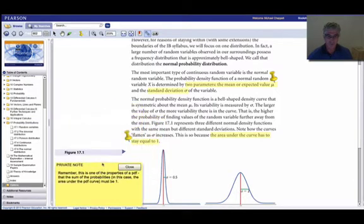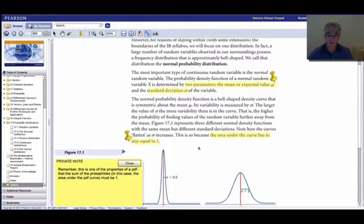Also, the area under the curve has to be equal to one. So if you've got a very tight distribution, small standard deviation, the curve will be high, the peak will be sharp. If you've got a much larger standard deviation, then the curve will be flatter. The peak will be lower. That's to make sure that the area under it is always one.